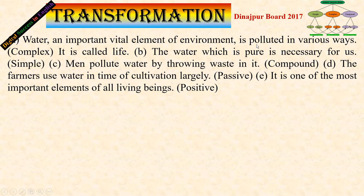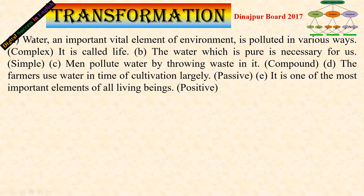These are the dependent clauses. The mask — the main clause — is positive. The relative pronoun is applied in the dependent clause, including this development. This is different from the attendant clause. Let's say: water, which is an important vital element of the environment, is polluted in various ways.